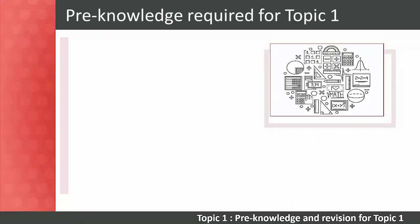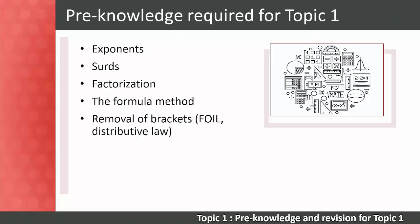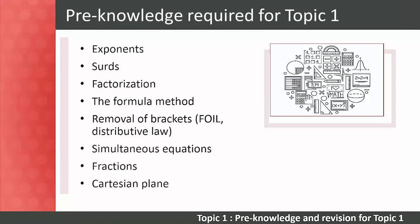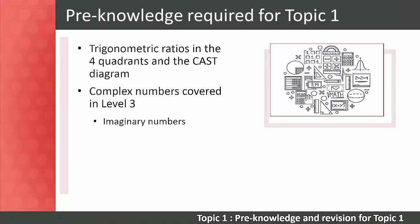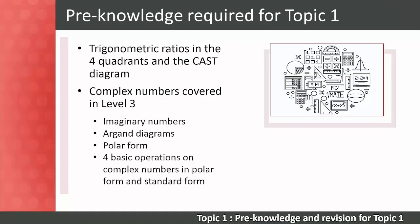Let's take a look at some of the pre-knowledge required to understand complex numbers: exponents, combinations, factorization, the formula method, removal of brackets including FOIL and the distributive law, simultaneous equations, fractions, the Cartesian plane, trigonometric ratios in the four quadrants, and the CAST diagram. Level 3 complex numbers content includes imaginary numbers, Argand diagrams, polar form, and the four basic operations on complex numbers in both polar and standard form.